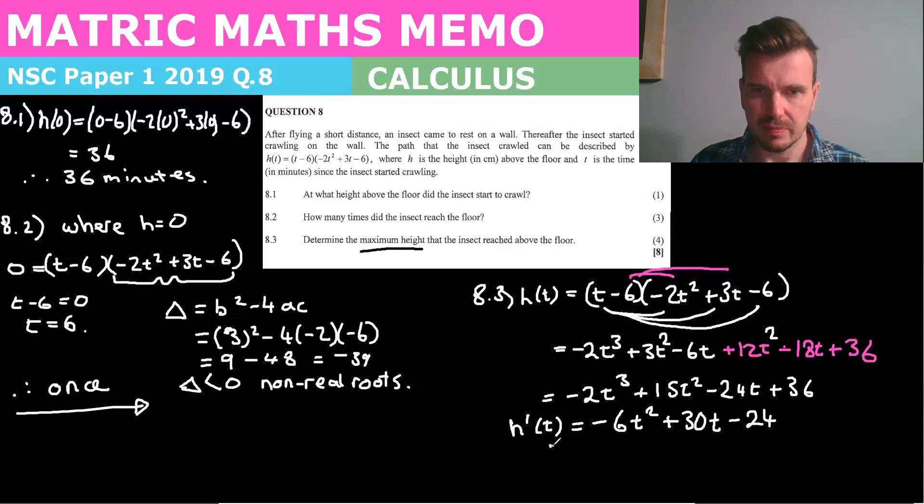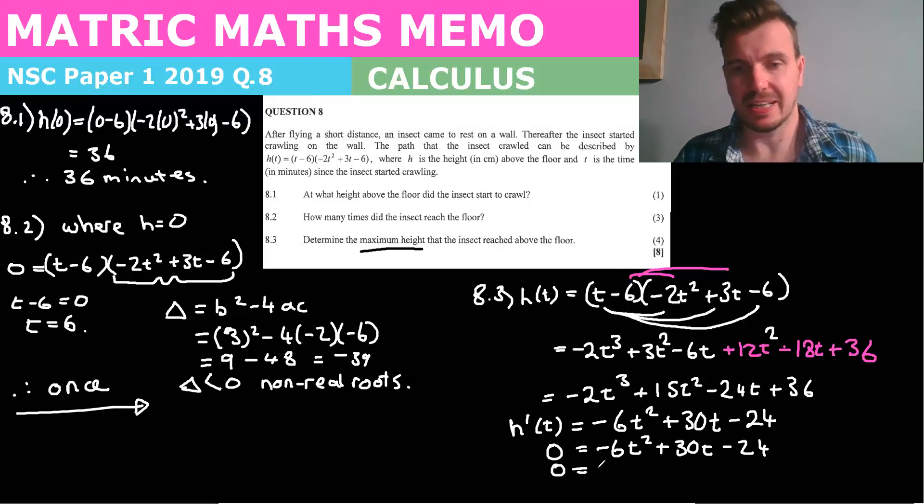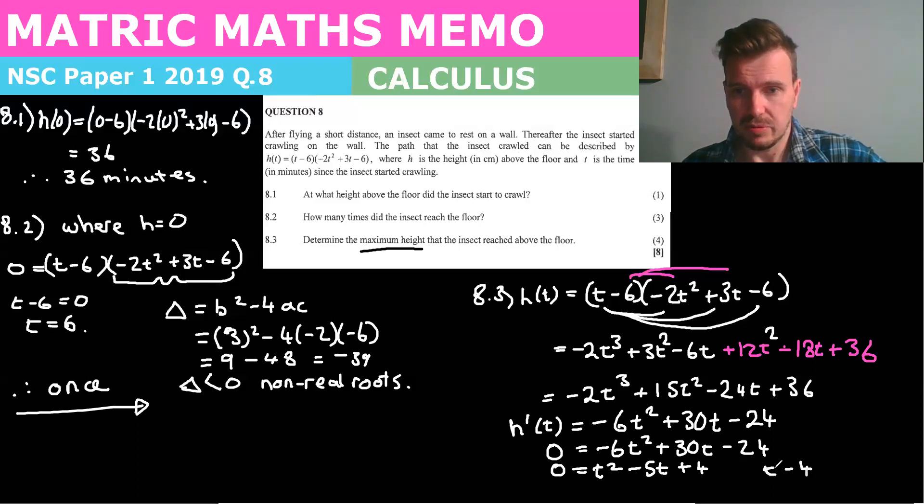Okay. And we make that equal to zero. Now what I'm going to do is just divide it through by, well, I'll divide it through later by six. Okay. To make it easy. I'm going to divide it through by six. I'm actually going to divide it through by negative six. So I get t squared minus five T plus four. Okay. And that gives me t minus four, t minus one.